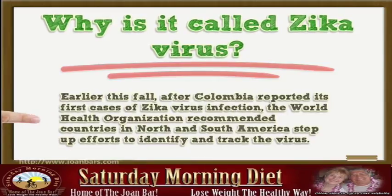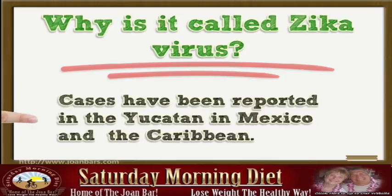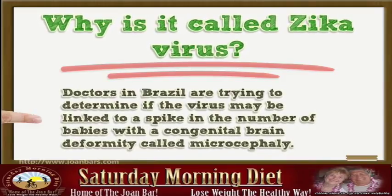Earlier this fall, after Colombia reported its first cases of Zika virus infection, the World Health Organization recommended countries in North and South America step up efforts to identify and track the virus. Cases have been reported in the Yucatan in Mexico and the Caribbean. Doctors in Brazil are trying to determine if the virus may be linked to a spike in the number of babies with a congenital brain deformity called microcephaly.